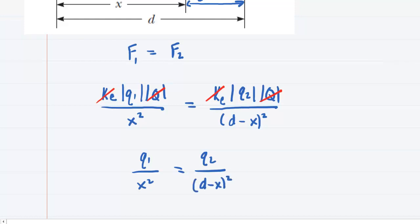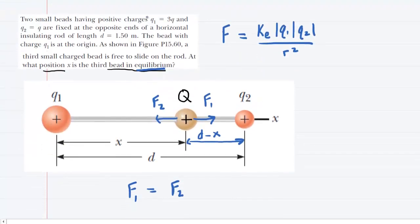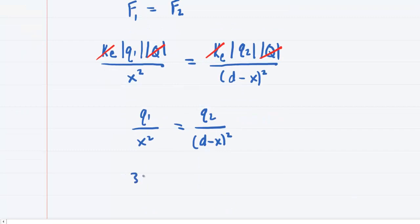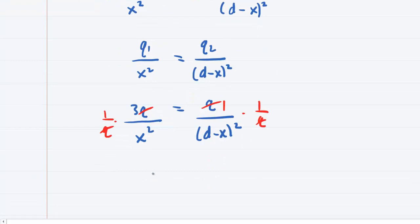Now if we wish, we can plug in the known values. We come back up here, and we see that q1 was equal to 3q, and q2 was equal to q. Now that's actually somewhat convenient, because we can basically multiply both sides of this equation by 1 over q, and those q's would cancel out. Remember that you would leave a placeholder 1 in the numerator on the right-hand side. So now we have 3 over x squared equals 1 over d minus x squared.